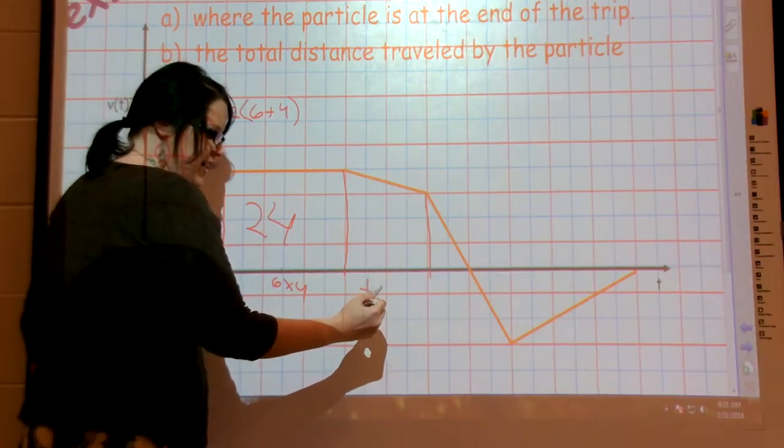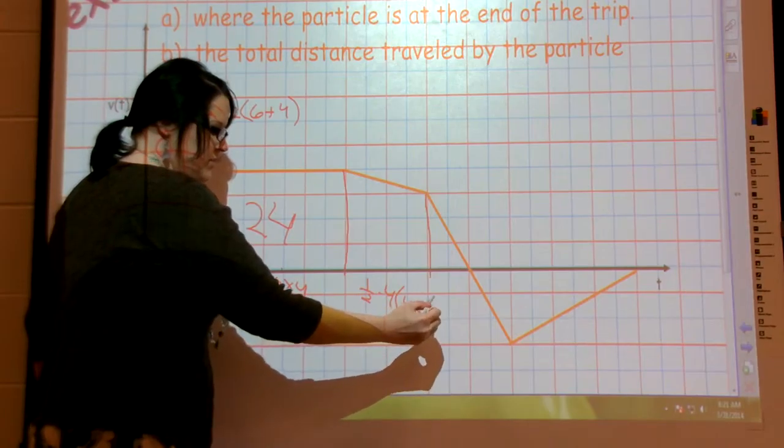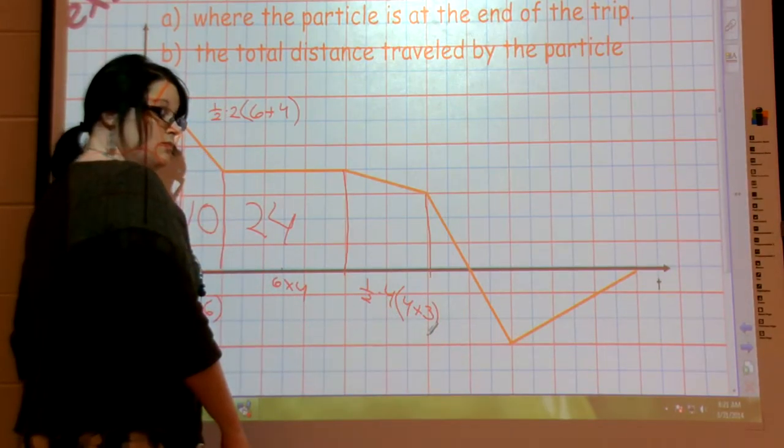Trapezoid here, what's the height? Four. Four. Bases is four plus three. So I end up getting fourteen. Fourteen.